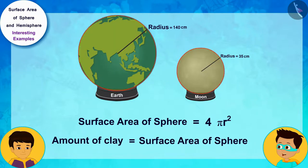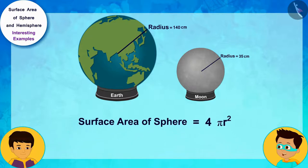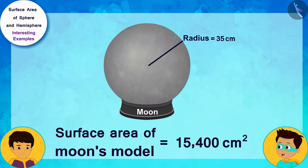Let me solve this by writing the radius of the moon's model 35 centimeters instead of r first. Manas, the surface area of the model of the moon is 15,400 square centimeters.